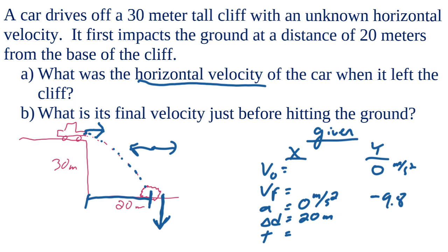The acceleration in y is negative 9.8 m/s² — that's gravity, the only force acting on it once it's in the air. For displacement, we're starting at the top of the cliff and ending up 30 meters below our starting point, so we make that a negative value. Time is also unknown in y.